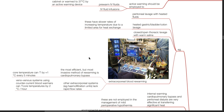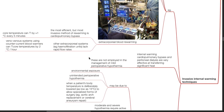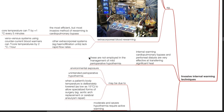Other extracorporeal systems, such as hemofiltration units, lack rapid flow rates. For example, veno-venous systems using counter-current blood warmers can increase core temperatures by 2 degrees Celsius per hour. Internal warming via cardiopulmonary bypass and peritoneal dialysis are very effective at transferring significant heat.